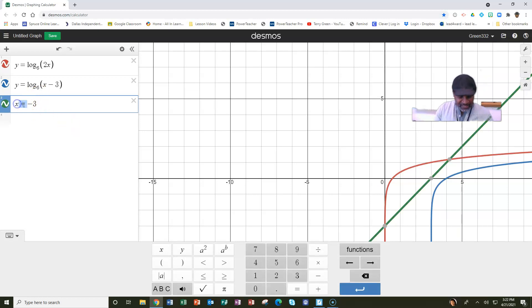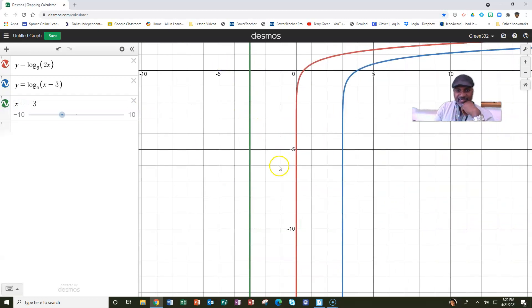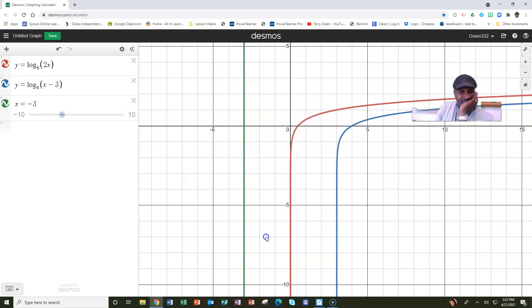When x is equal to negative 3, the graphs, there is no intersection. These graphs never touch one another. There is no answer. There is no intersection.